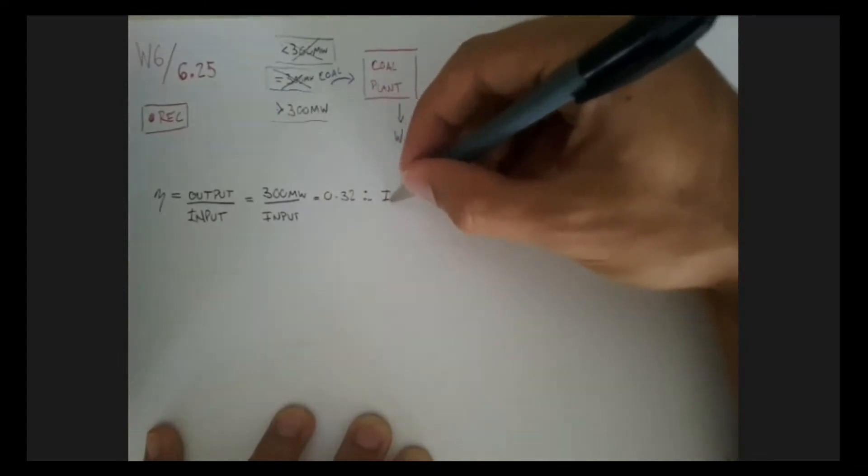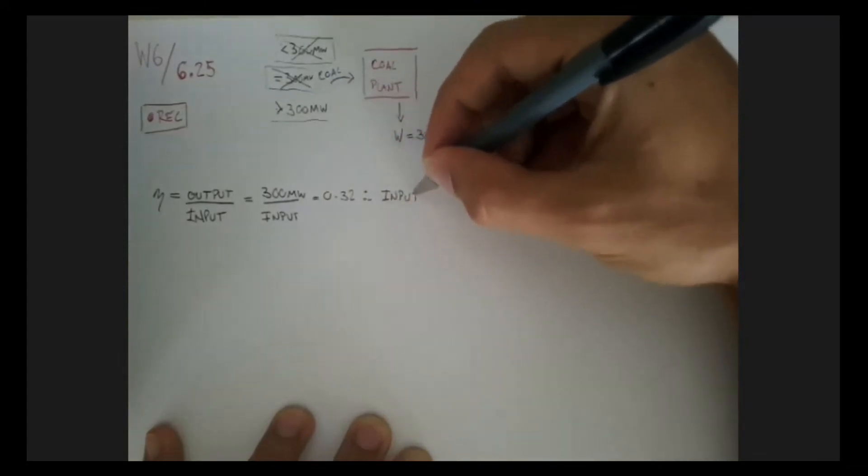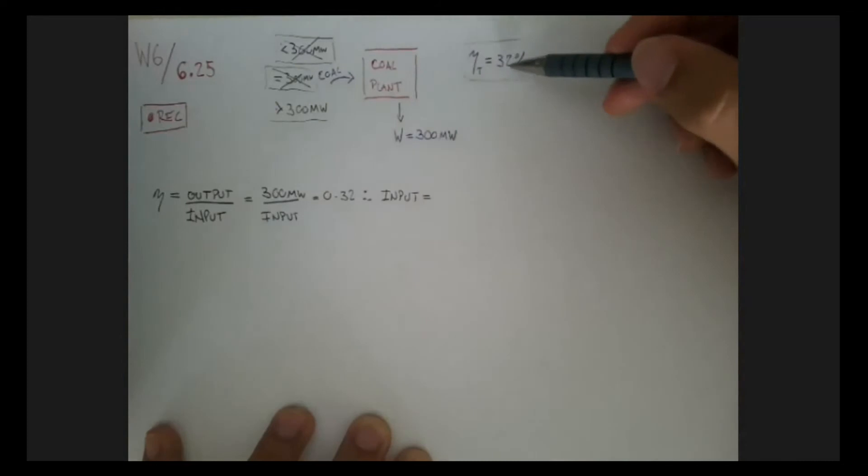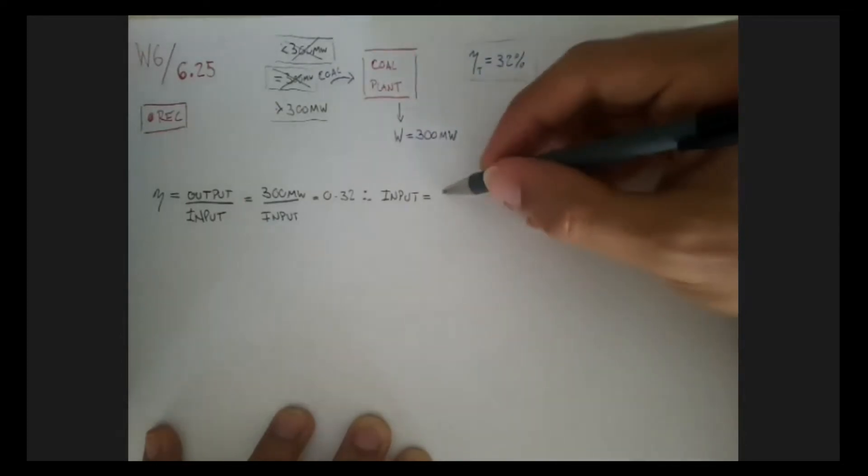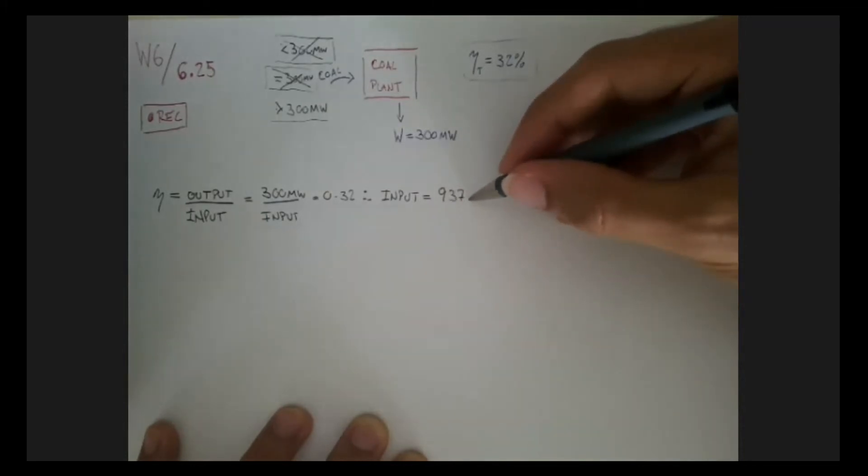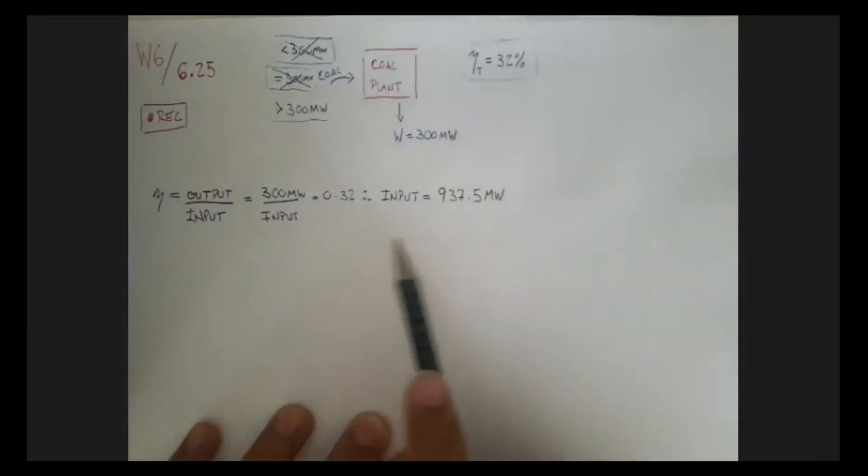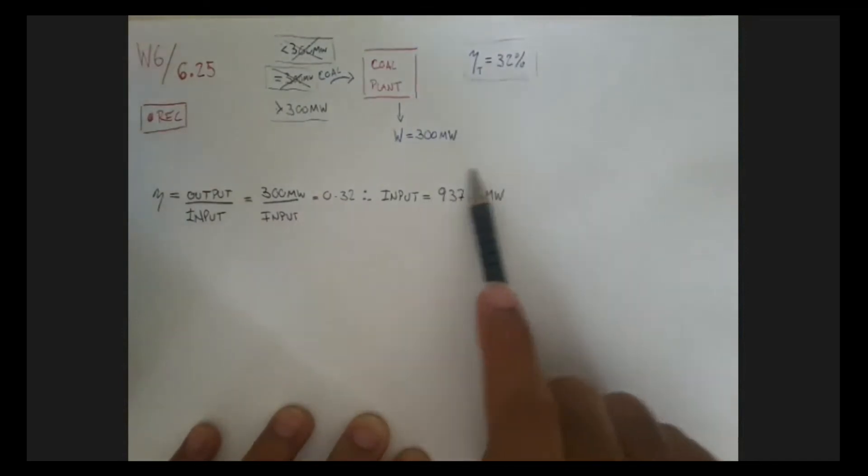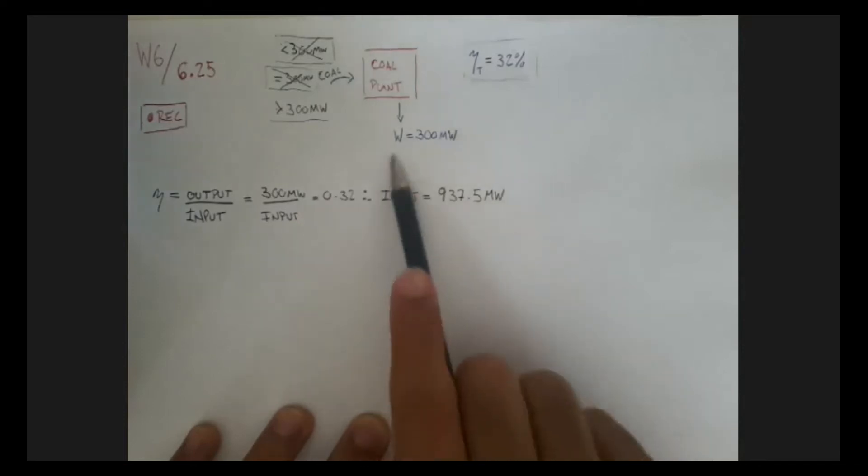From here it becomes trivial to find the input, which has to be about three times more, because it's only a third efficient. Indeed, it's 937.5 megawatts. So we are actually supplying energy at a rate of 937 megawatts to be able to get the 300 out of this coal plant.